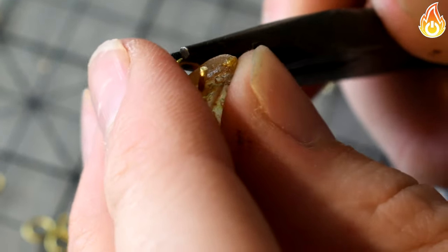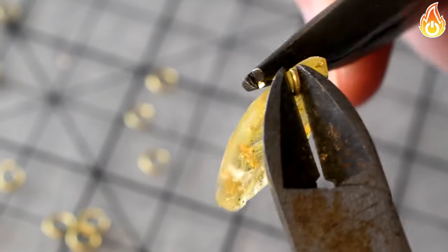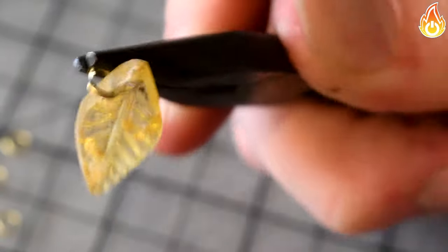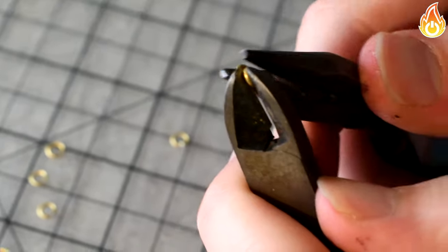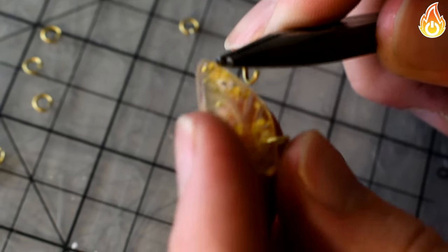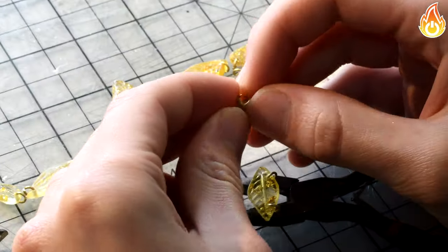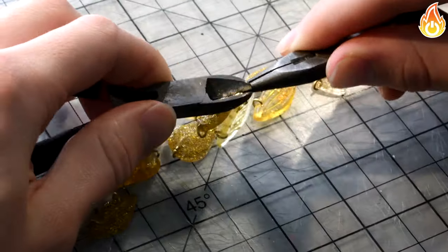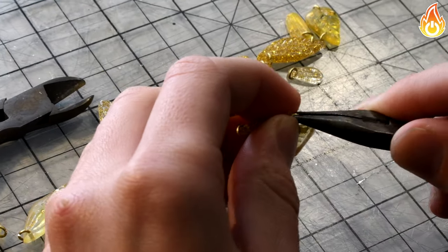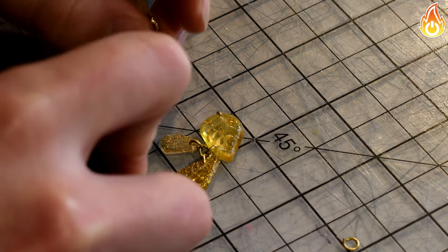Now, we link all the leaves together with the jump rings. Once you have linked all the leaves together, the bracelet is done.